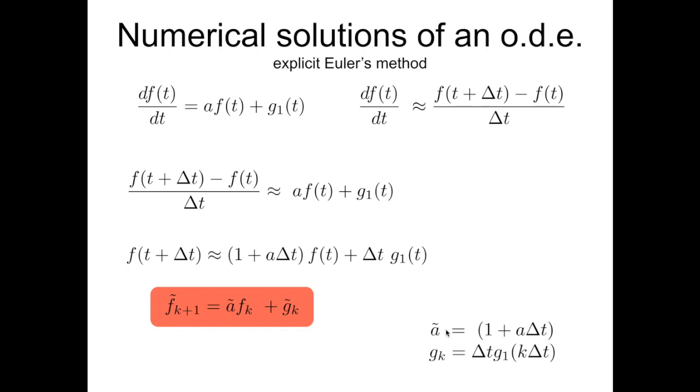These are the definition of these temporary factors, temporary numbers that I defined. a tilde is 1 plus a times delta t, and gk is delta t times g1 calculated in times which are integer multiples of the delta t.